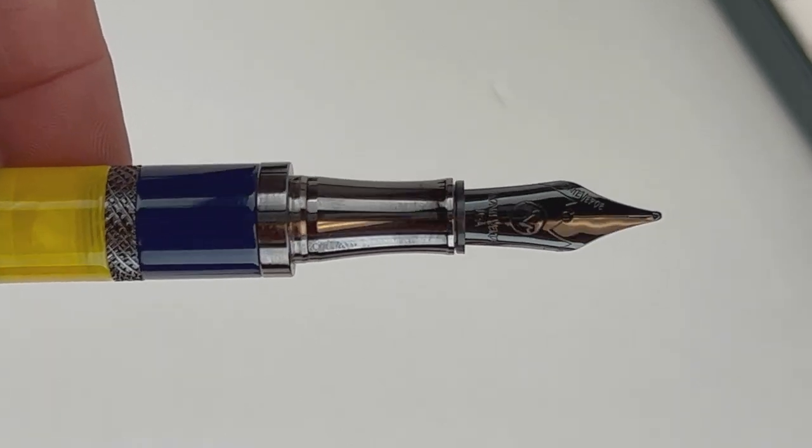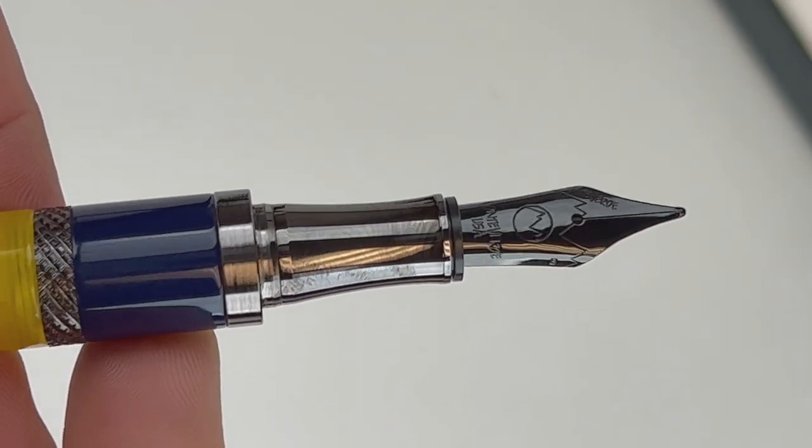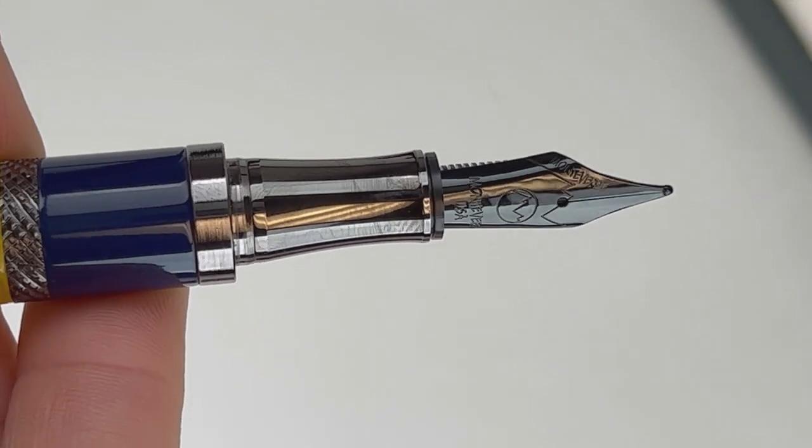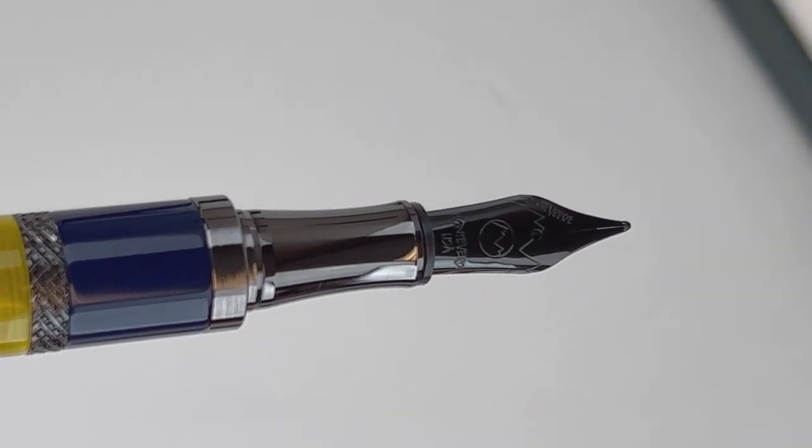The Monteverdi Regatta pens do come with a stainless steel No. 6 fountain pen nib, and the blue-yellow is a gunmetal-plated stainless steel nib.